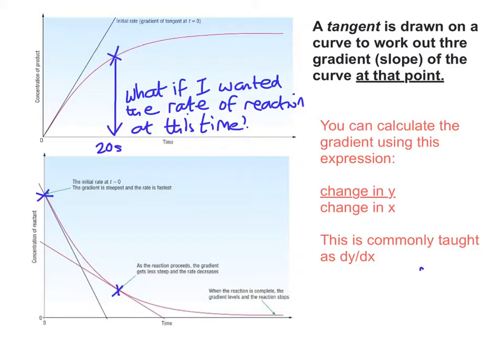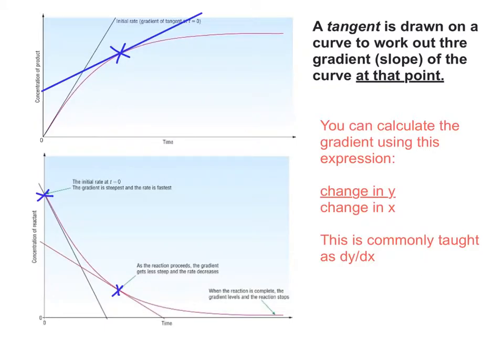What if I wanted the rate of reaction at that time instead of the start? I draw a tangent through that line, and the tangent must touch the curve. Now what I can work out is the change in y with the change in x at that particular point. I do the change in y over the change in x and I use that to work out my gradient.